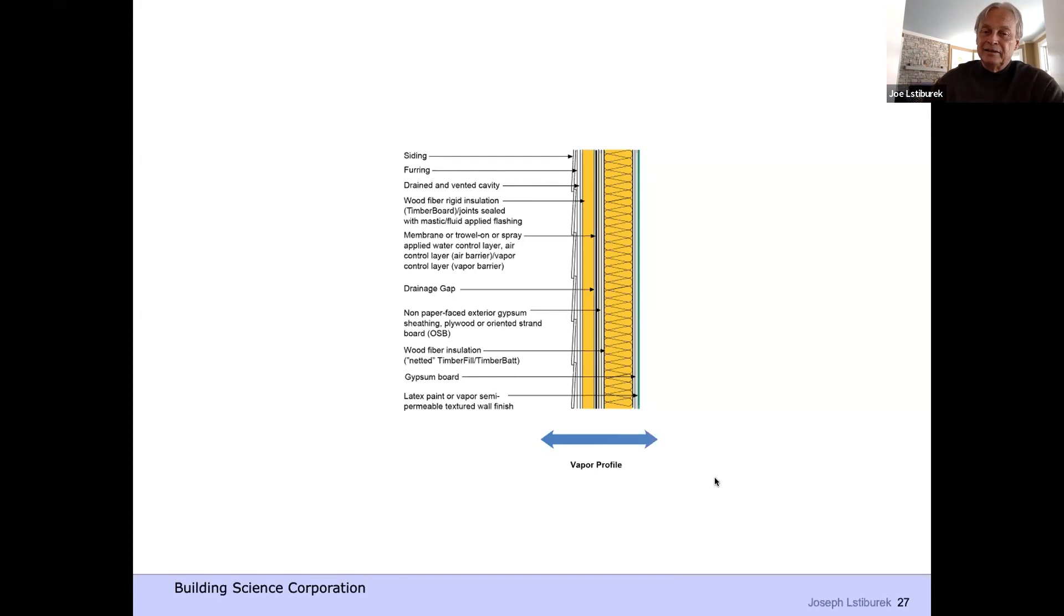Well, could I take a wood frame wall and just put the timber board over it? The answer is yeah. What handles the water? Well, I'm going to have to seal the joints of the outside board, back ventilate and drain my cladding, and I've got myself a completely flow through assembly.